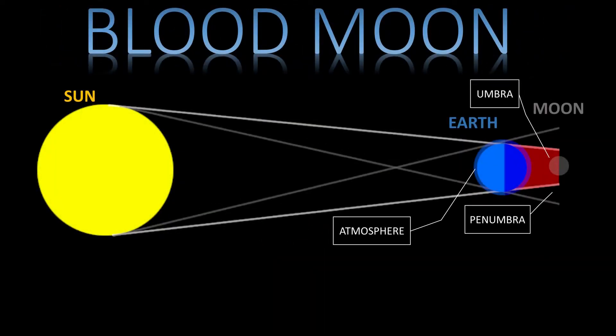A blood moon occurs during a lunar eclipse when the shorter wavelengths of the sun's light are scattered by the earth's atmosphere, while the longer wavelengths are refracted onto the moon's surface, leading to the moon getting a blood red appearance. This is similar to the principle observed at sunset or sunrise.